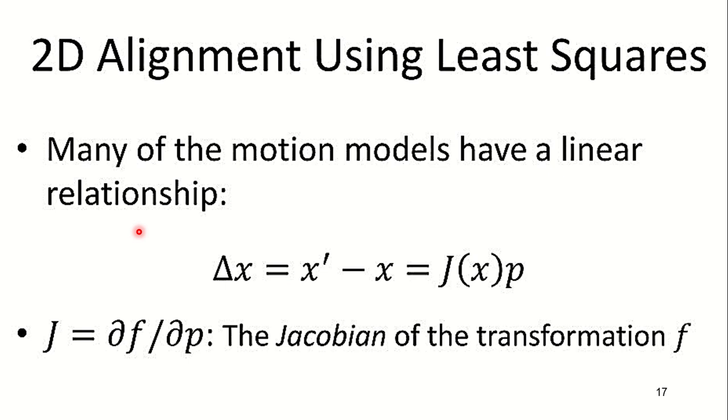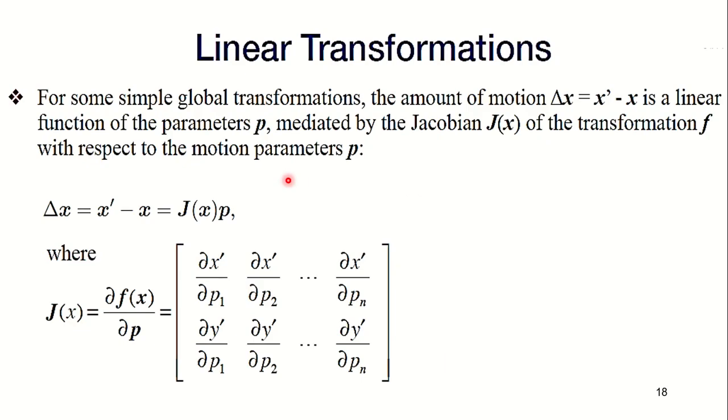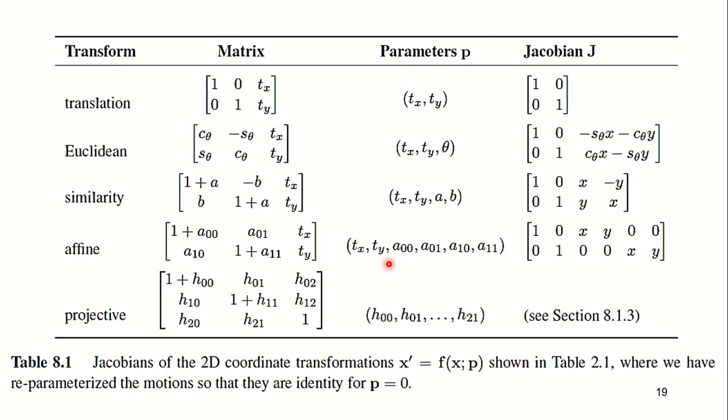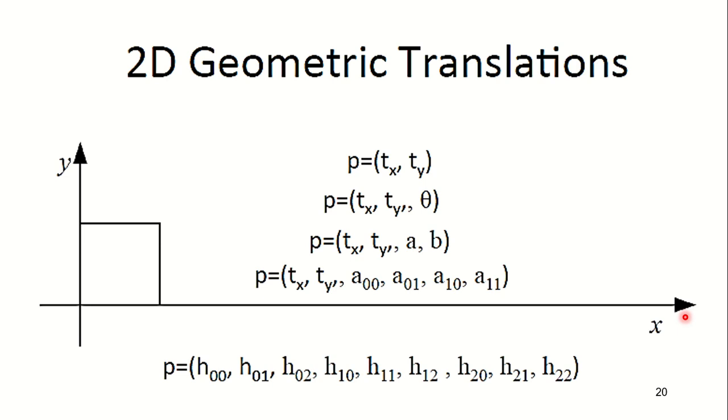Many of the motion models have a linear relationship. Δx = x' - x. J(x) is the Jacobian transformation for the function f, which is equal to ∂f/∂p. For simple global transformations, the amount of movement Δx = x' - x is a linear function of the parameter p, which is mediated by the Jacobian J(x). Your Δx = x' - x = J(x) · p. The corresponding Jacobians of the 2D coordinate transformations and their matrix, the parameters and the Jacobian matrix, are given. These are the parameters used for each transformation in the 2D translations.